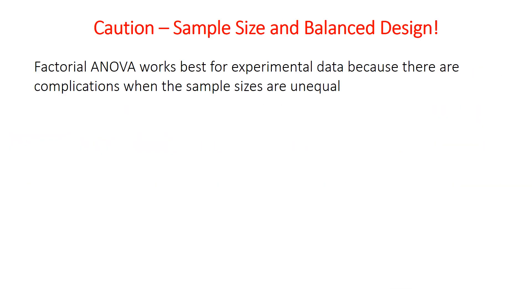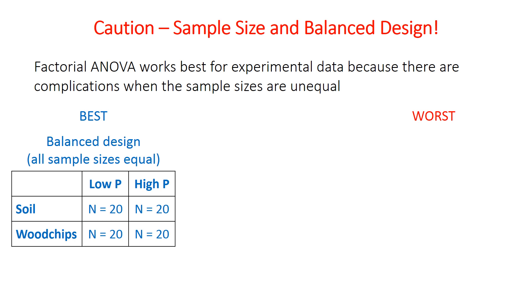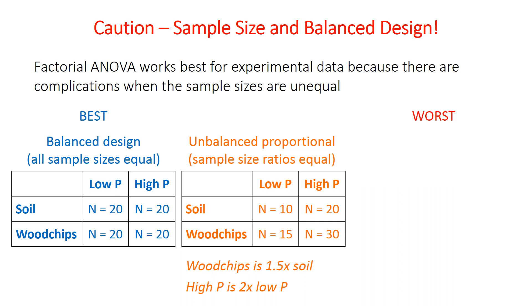A big caution about sample size: factorial ANOVA gets complicated when sample sizes are unequal, so it works best for experimental data where you can control and ensure every combination has the same sample size. That's the best-case scenario — the balanced design — where all combinations of independent variable factors have the same number of samples, in this case 20. If sample sizes are unequal, the design is no longer balanced; it's called unbalanced.